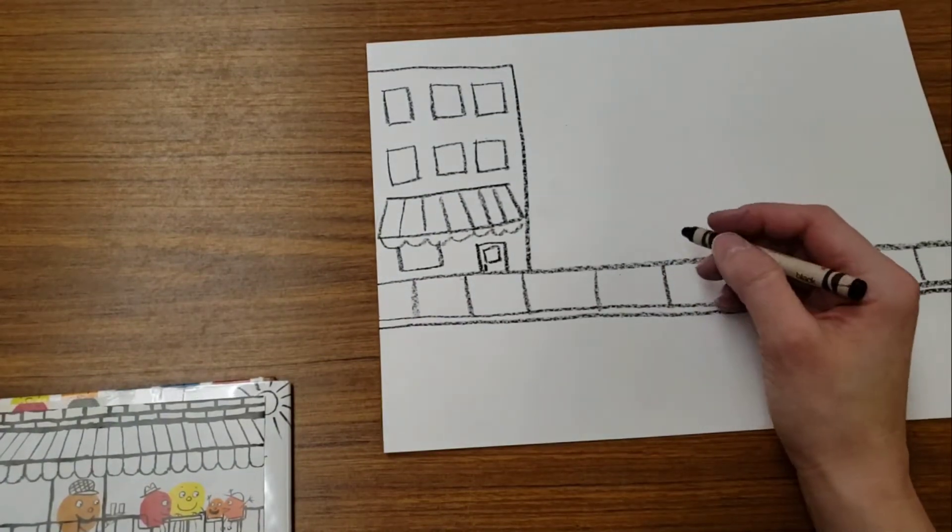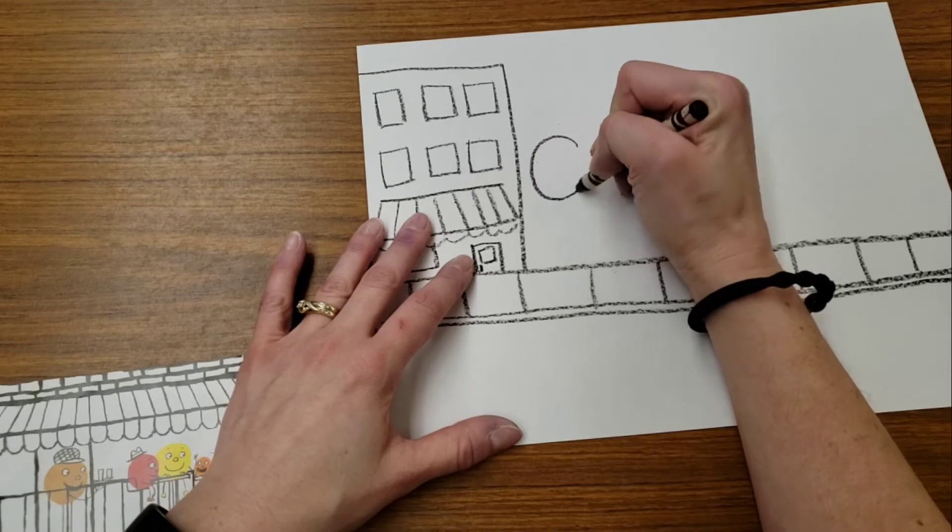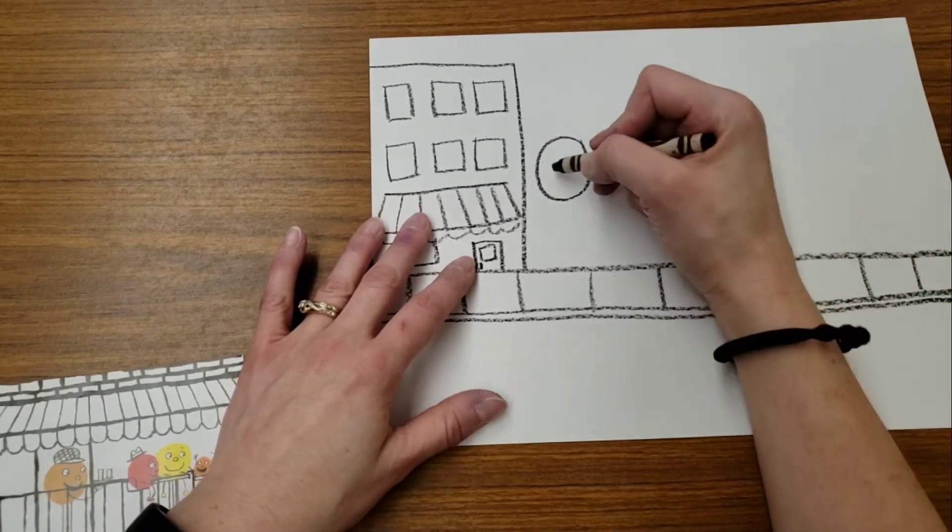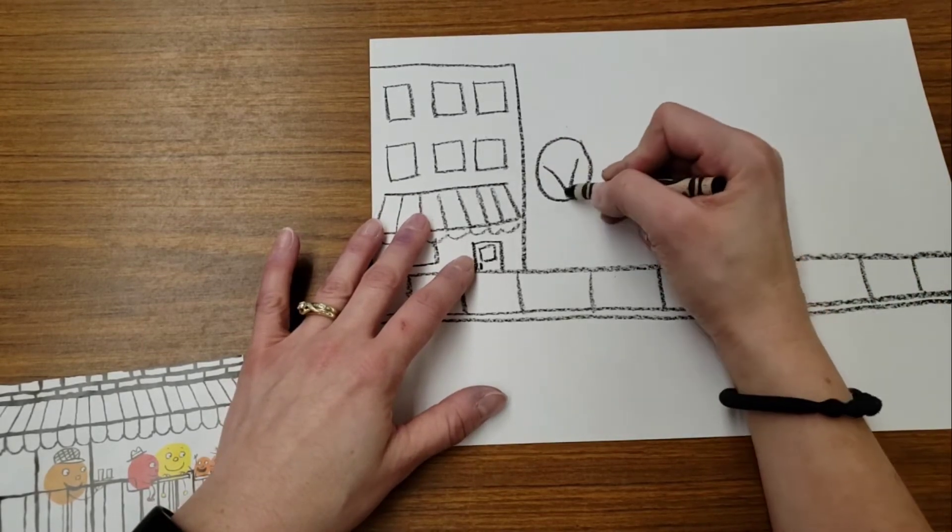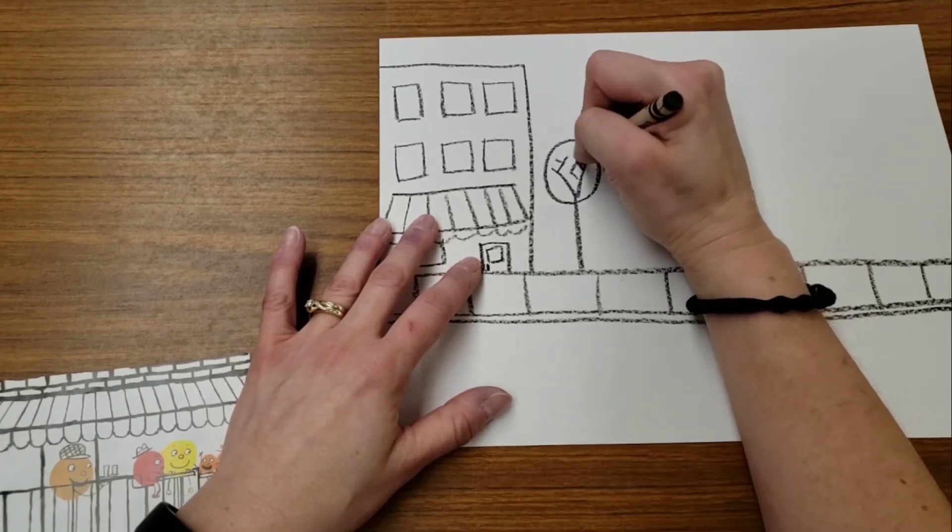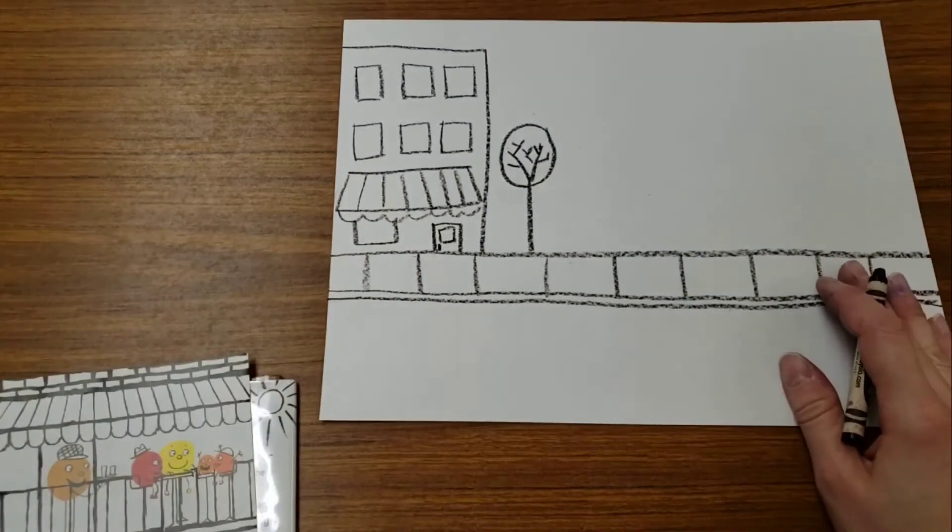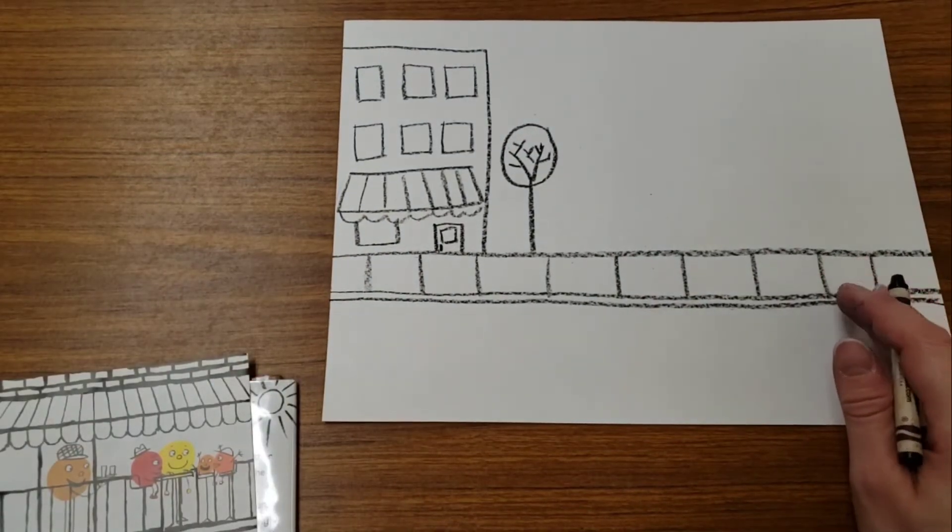In addition to buildings, you can also add trees. A lot of the trees look like this, where it's an oval. Then we put a Y inside the oval and give the Y lots of wiggly little branches. That makes a nice tree in our town.